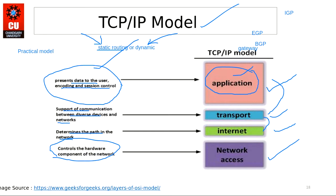As a network administrator, if something happens to cables or hardware, you first go to the physical layer. You must know the functioning of each layer and which layer to go to in order to fix things. Think of it like a university — if you have a fees problem, you go to accounts; if it's about studies, you go to your department. That is why this layering and these standard protocols have been defined by the International Standard Organization.